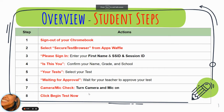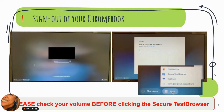Just an overview of the student steps: you're going to completely sign out of your Chromebook, go down to the App Waffle, and choose Secure Test Browser. Type in your first name, SSID, and session ID. You're going to confirm it's you, select the test your teacher provides you, wait for their approval, turn on your camera and mic, and then you'll be able to begin the test.